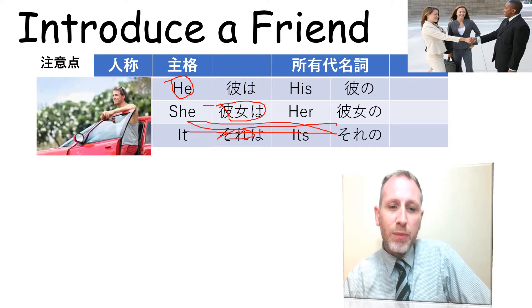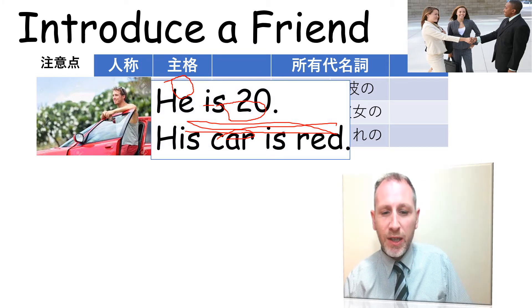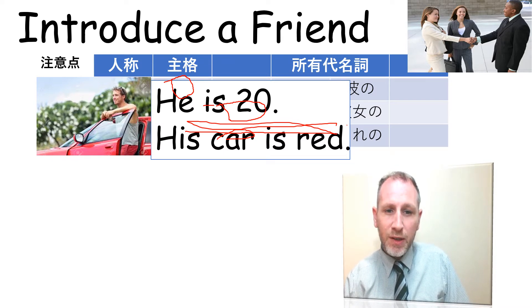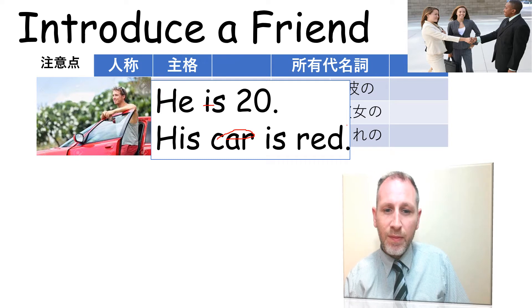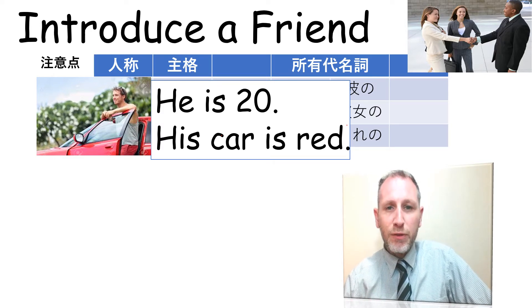Let's have an example. Here we have a man and a red car. How old is he? He is 20, and his car is red. It's a very simple sentence — talking about your friend or introducing some aspect of your friend.